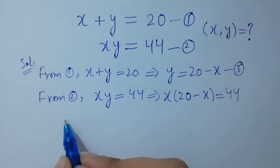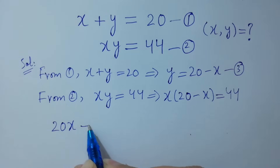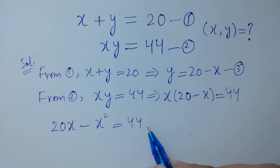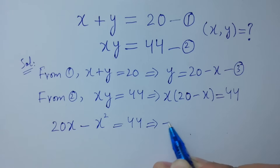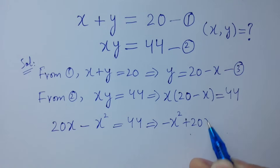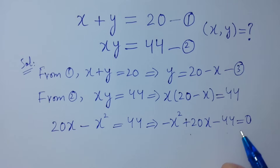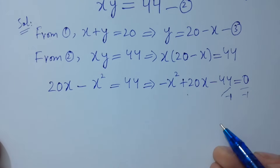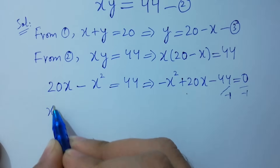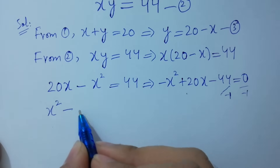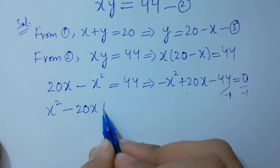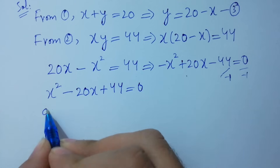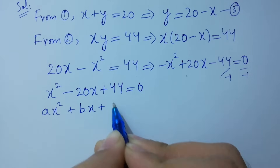x times 20 is 20x, minus x times x gives x squared, equal to 44. So here we have minus x squared plus 20x minus 44 equal to 0. Dividing by minus on both sides, we have x squared minus 20x plus 44 equal to 0, which is like the quadratic equation ax squared plus bx plus c equal to 0.